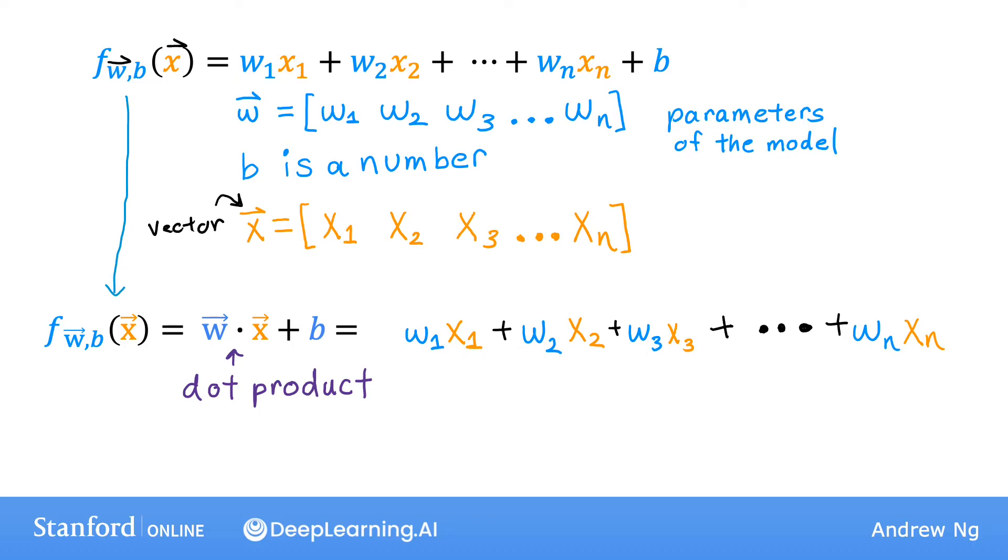Writing that out, this means that the dot product is equal to w1 x1 plus w2 x2 plus w3 x3 plus all the way up to wn xn, and then finally we add back in the b on top. And you notice that this gives us exactly the same expression as we had on top. So the dot product notation lets you write the model in a more compact form with fewer characters.